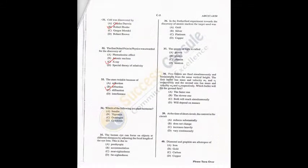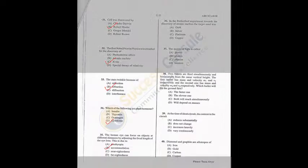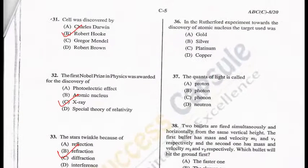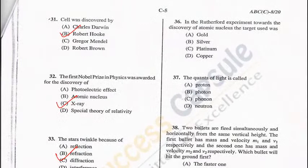Q34 = D, Q35 = B. Question 36: In the Rutherford experiment towards the discovery of the atomic nucleus, the target used was gold foil — A is the correct answer. Question 37: The quantum of light is called a photon — B is the correct answer.